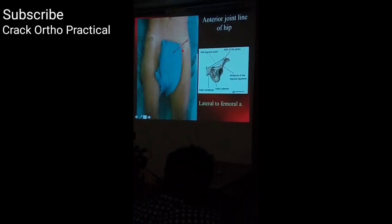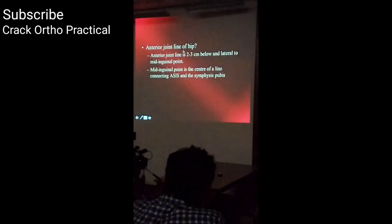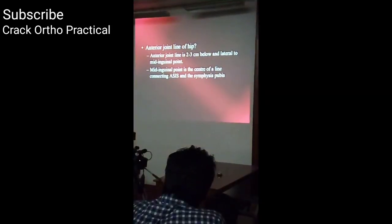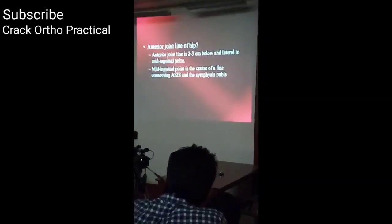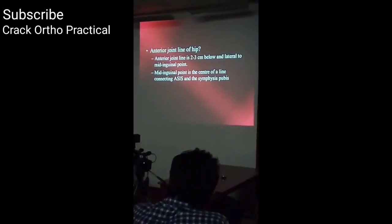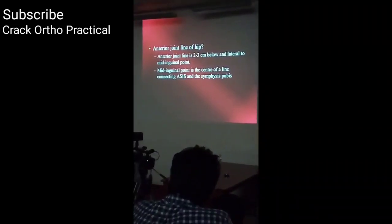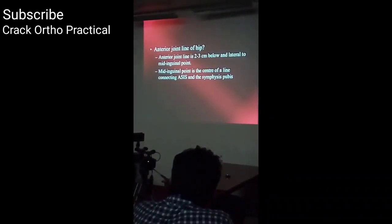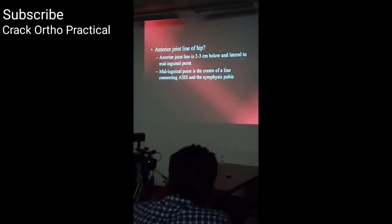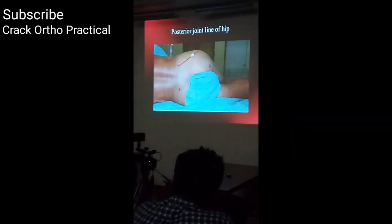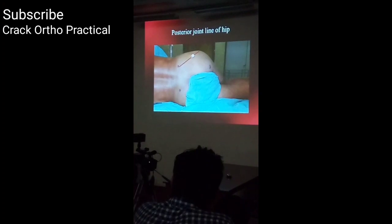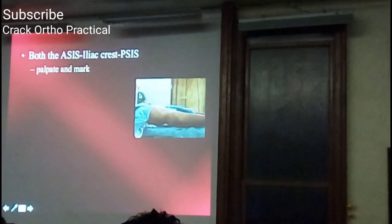To summarize: the anterior hip joint line remains just below and lateral to the mid-inguinal point. The mid-inguinal point is the center of the line connecting the antero-superior iliac spine and the symphysis pubis. You must be able to answer this correctly, as it is commonly tested. Then examine for anterior joint line tenderness.